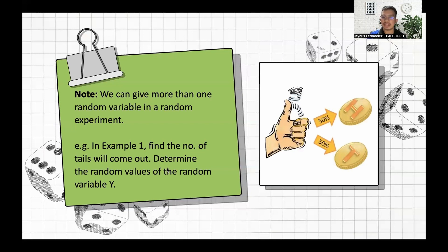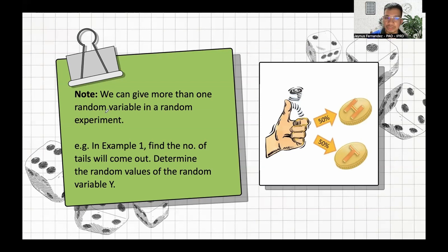An important point to understand is that it is not necessary to mention only one random variable in a random experiment. You can define any number of random variables. For example, in example one we used random variable X for heads; we could also define random variable Y as the number of tails, and the same process would apply.